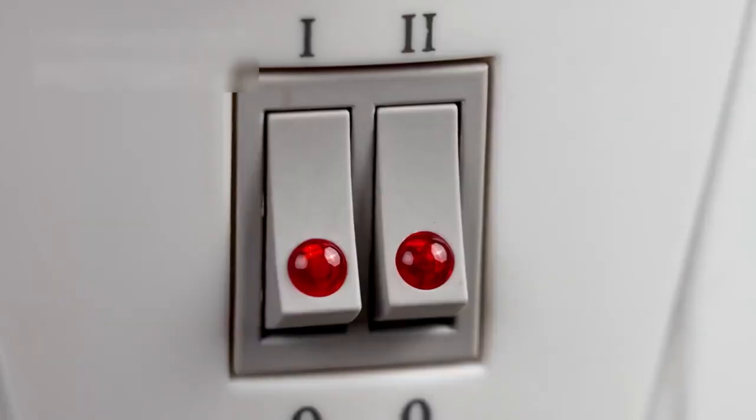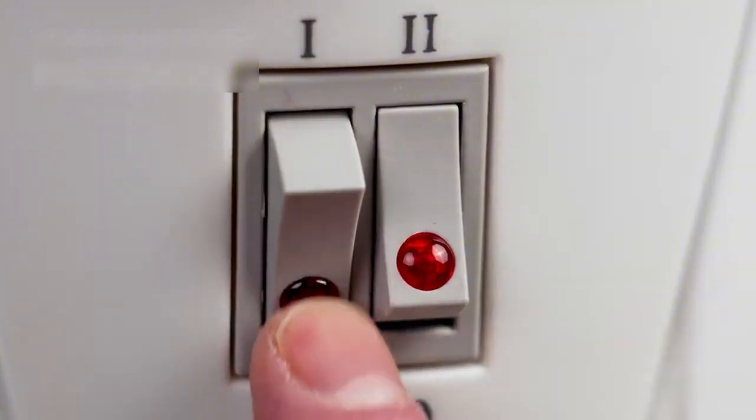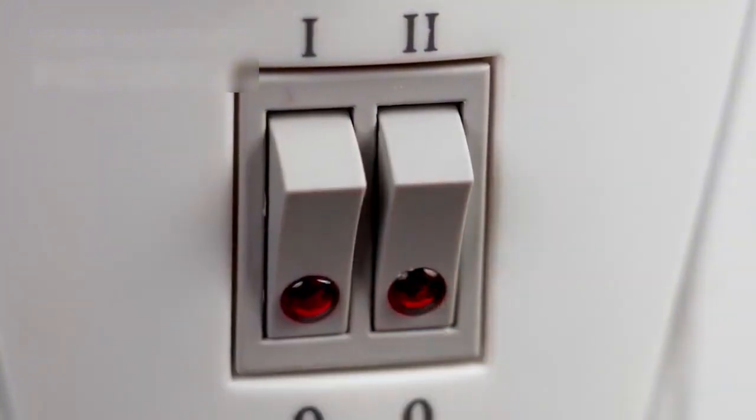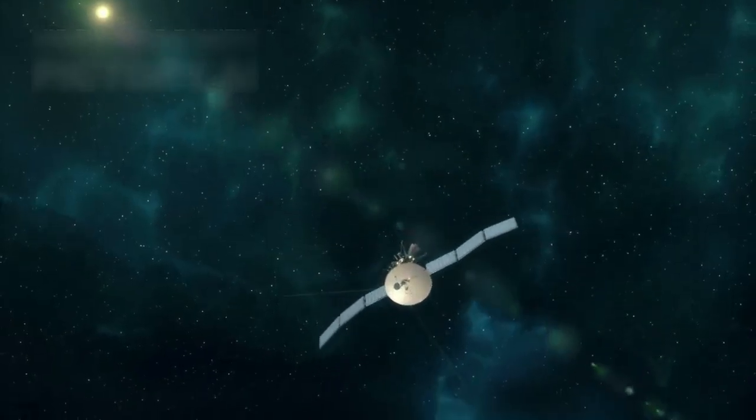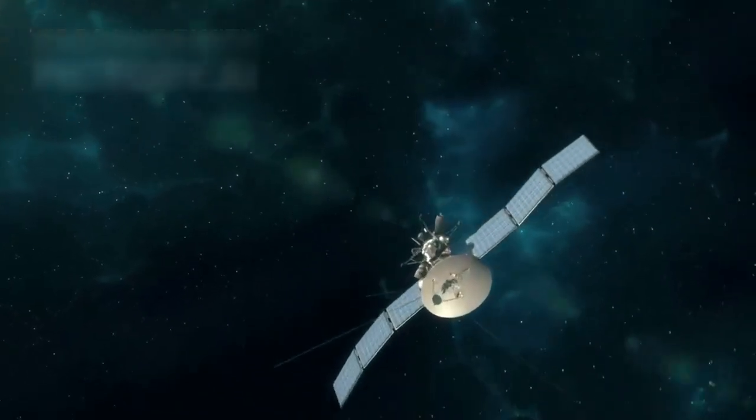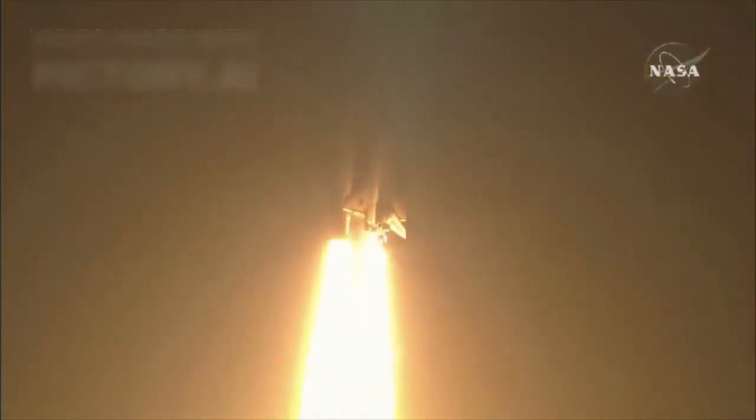NASA extended the Voyager's lives by turning off non-essential systems. By shutting down heaters and saving power, Voyager 2 may continue working into the 2030s. This would allow even more deep space data to reach Earth. When the mission ends, it will mark the close of a groundbreaking era in space exploration.